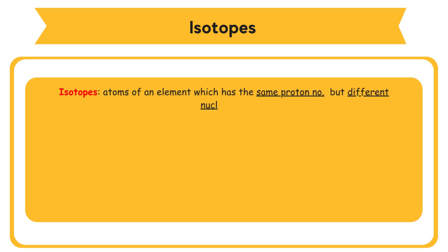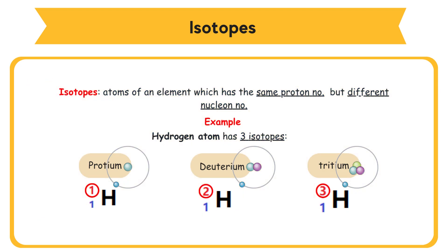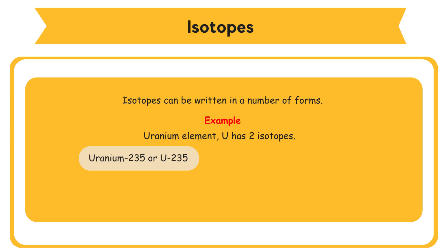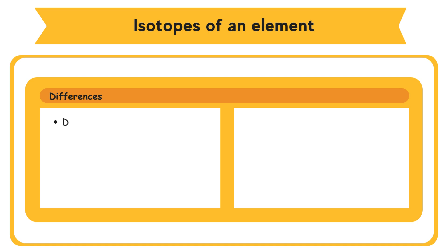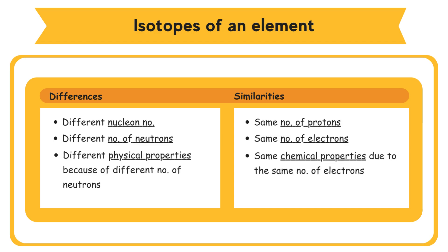2.4 Isotopes and its Uses. Isotopes are atoms of an element which have the same proton number but different nucleon numbers. For example, hydrogen has three isotopes — protium, deuterium, and tritium — all with proton number 1 but different nucleon numbers. Isotopes differ in nucleon number, number of neutrons, and physical properties, but share the same number of protons and electrons, giving them the same chemical properties.